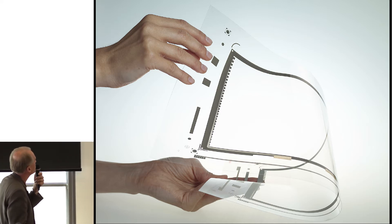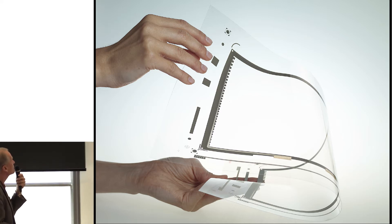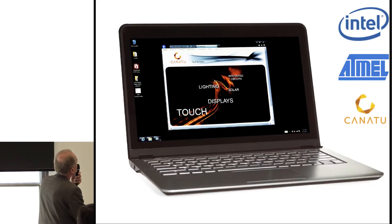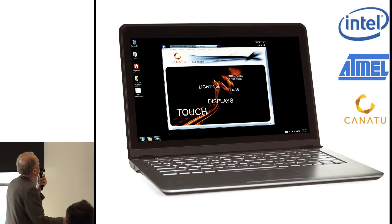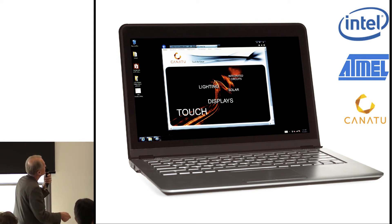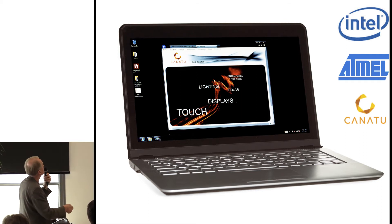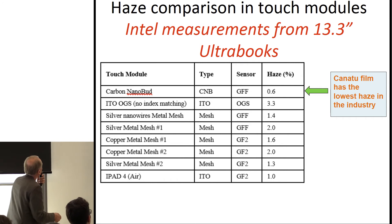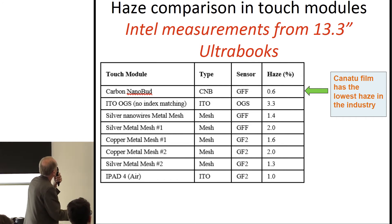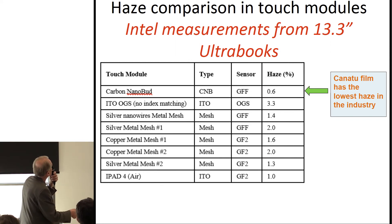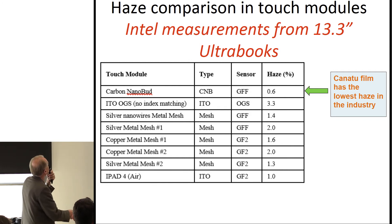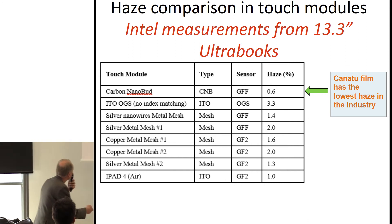Here are some examples of what has been done. The company now works with over 30 customers. One case we can talk about publicly is demonstrating touch for a 14-inch computer, together with Intel and Atmel. Intel was interested to see if our film was good and how it compared to everything else. Atmel is the biggest chip maker for touch drivers. The important result is that conductivity needs to be as good as ITO, but the optical properties are very important — haze and reflection. For nanotube-based material, haze and reflection are the lowest in the industry, even matching ITO. The film is now good enough for large-scale applications.